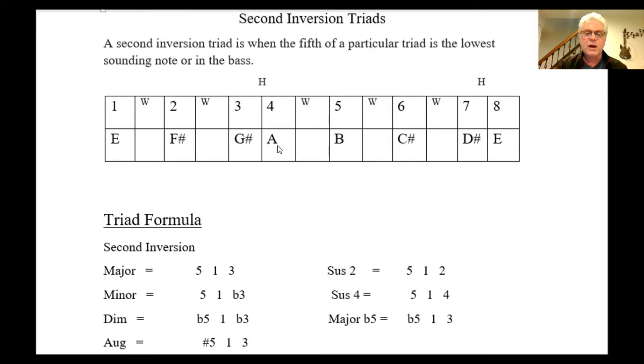In a minor triad, we'd start with the B again, fifth in the bass. It would be B, E the first, and then we'd have a flat three, which in this case we would flat it, so it'd be a G.